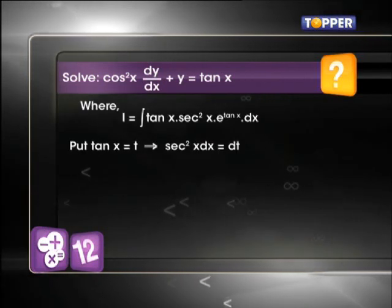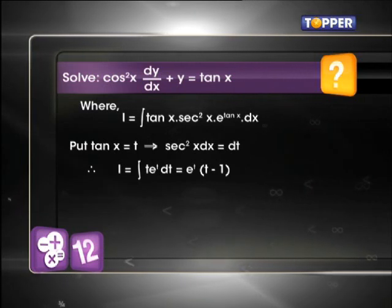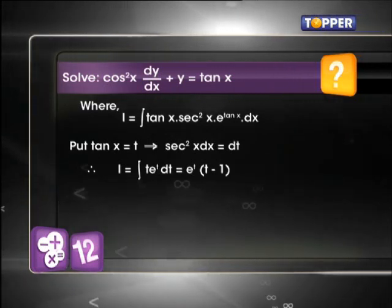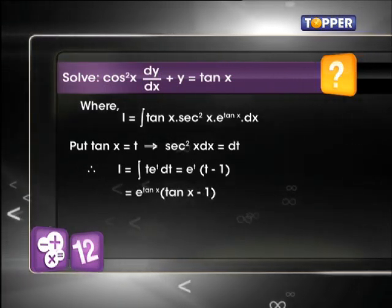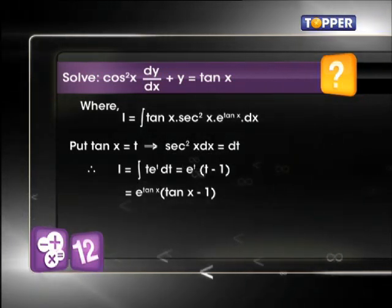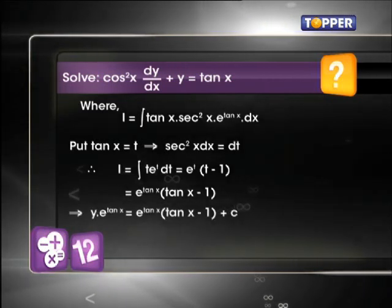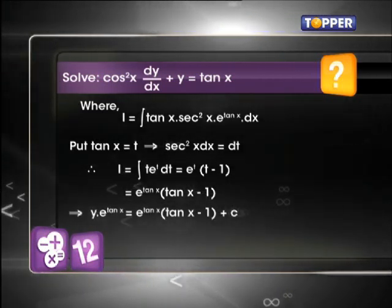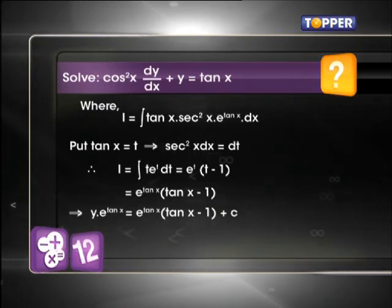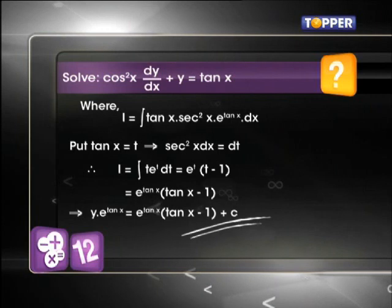Now, we take right hand side as I and solve it by the integration by parts method and we get e^(tan x)(tan x - 1). Thus, the final solution of this differential equation is y·e^(tan x) = e^(tan x)(tan x - 1) + c.